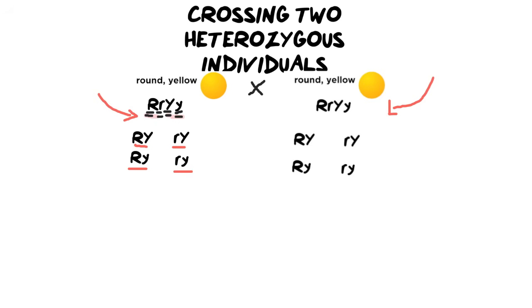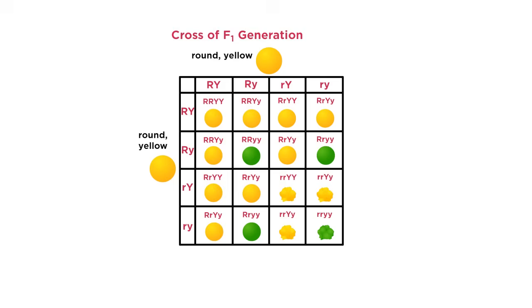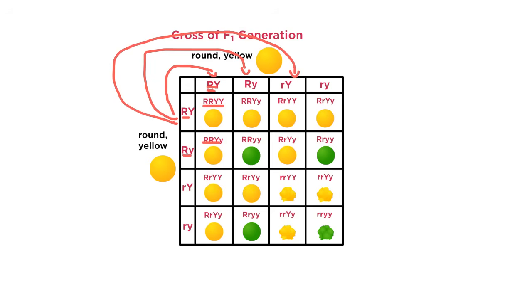Now let's put those gametes into the Punnett square. Once we have our two individuals' gametes placed, we can FOIL — essentially multiply into the bracket each time, figuring out all our crosses. For example, crossing one gamete with another produces a specific outcome. We do this for each individual gamete combination. Each time you multiply, you should have four separate outcomes per row, moving on to the next when done.